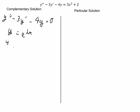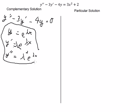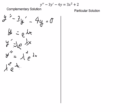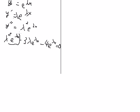If we take the first derivative, we get lambda times e to the power of lambda s. The second derivative gives lambda squared times e to the power of lambda s. Now we substitute everything into the equation, giving us lambda squared e^(λs) minus three lambda e^(λs) minus four e^(λs). We then factor this expression.